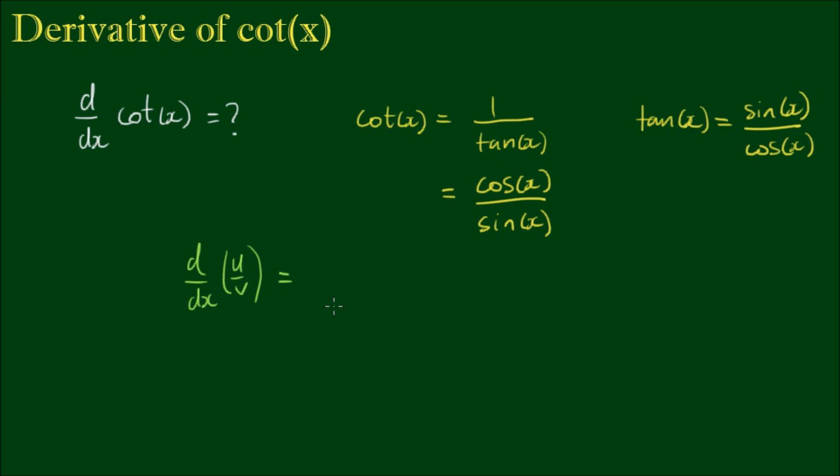And the quotient rule is we keep v multiplied by the derivative of u minus keep u by the derivative of v divided by v squared. So now we let u equals the cosine of x and v equal the sine of x.